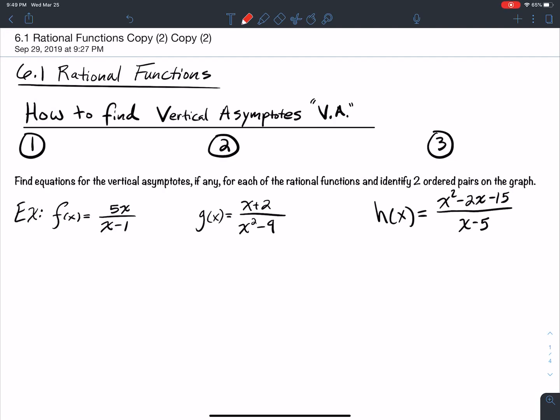This is 6.1 Rational Functions. First I want to talk about how to find vertical asymptotes.